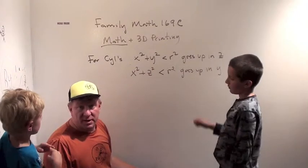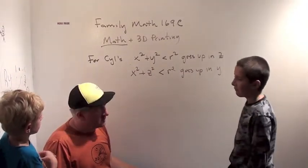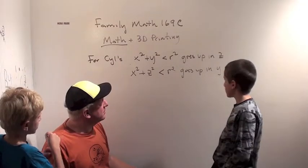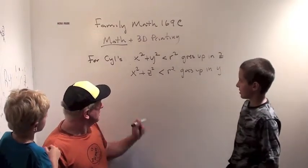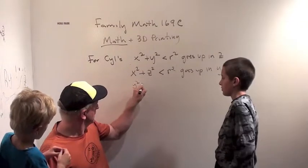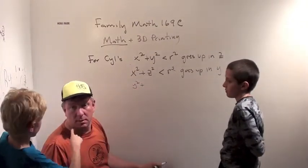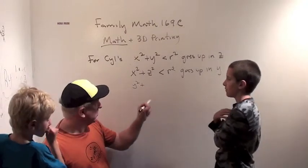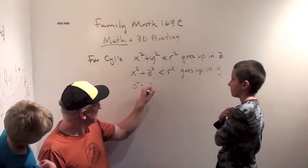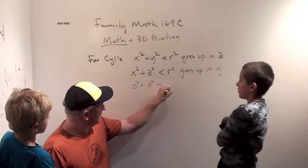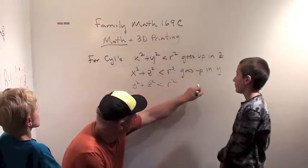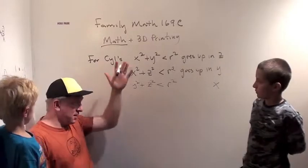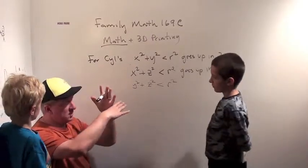What do you think would be the equation for something that was unconstrained in the x direction, a cylinder? Well, I would say y squared plus z squared. The x direction goes that way. Yeah, so y squared plus z squared is less than r squared. This should go in the x direction, and that'll give us a third cylinder, and we'll get sort of a cross.